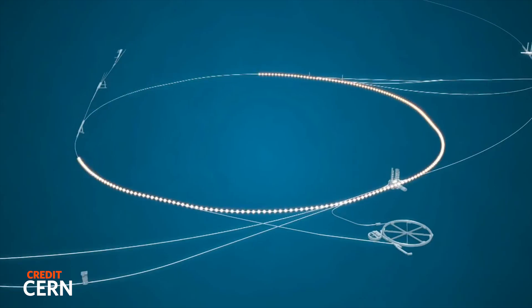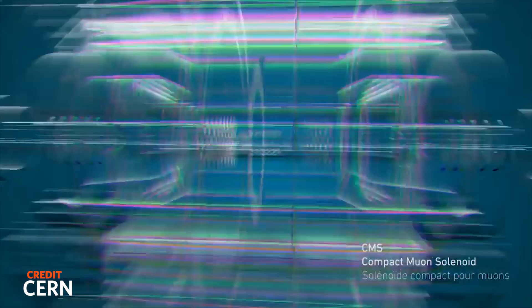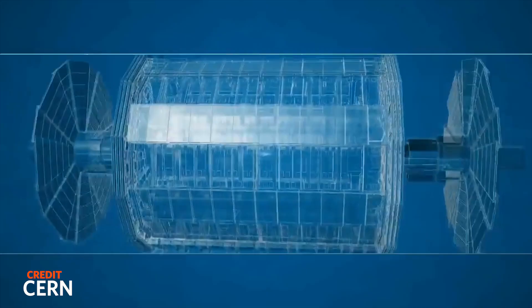The tube carries two sets of protons, which run around the ring in opposite directions. They cross paths at several points to create collisions.